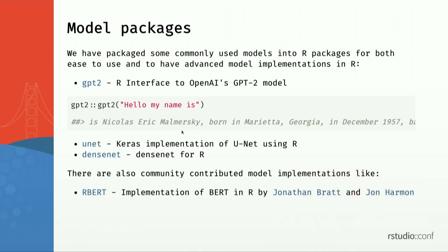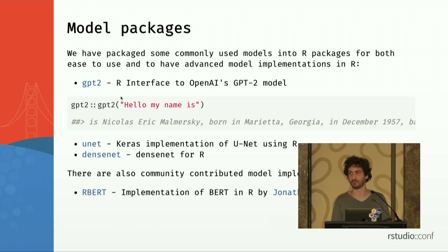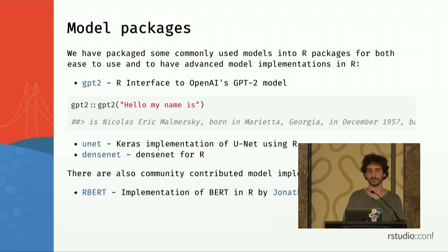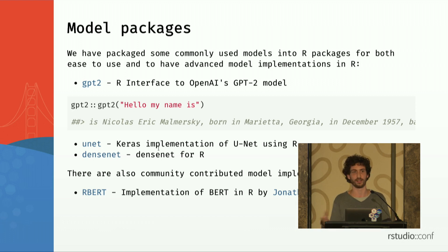We are also providing some model packages. We took commonly used deep learning models and created wrappers for them. For example, the GPT-2 package, where the GPT-2 model by OpenAI takes a prompt string and can complete it with text that really makes sense — it's pretty incredible. We also implemented some deep learning models using raw Keras layers, like UNET, which is an image segmentation model, and DenseNet, which is a convolutional neural network architecture. There are also community-contributed models, like RBERT by Jonathan and John Harmon, which provides an implementation of the BERT model — Google's model for text embedding.